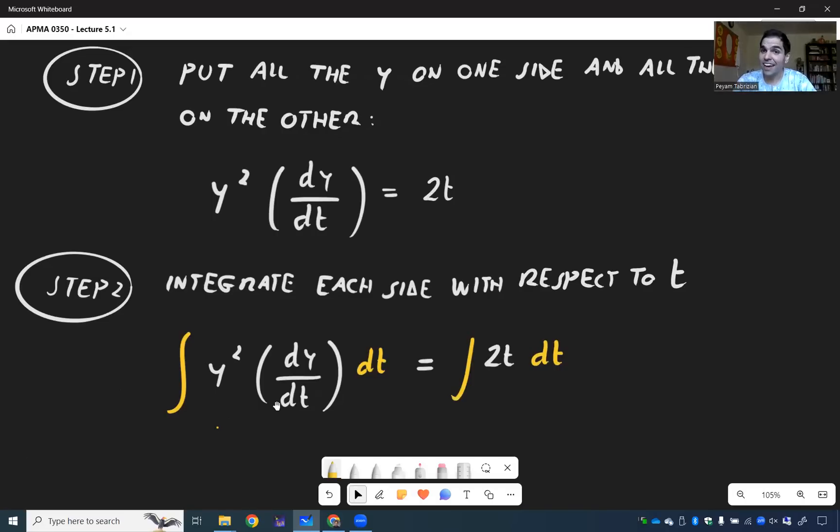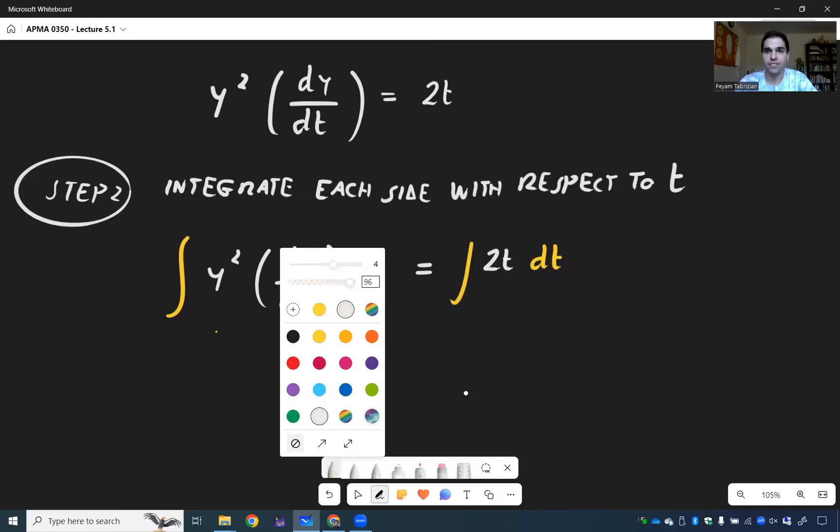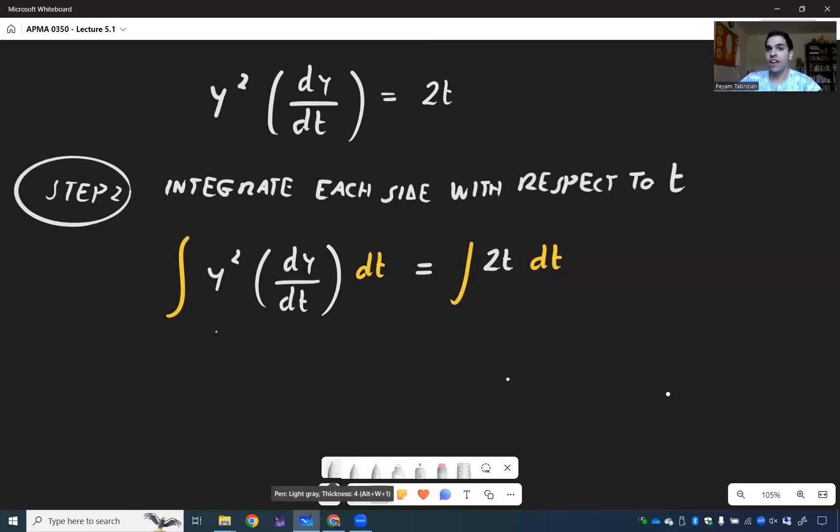Now the left hand side, you see a y prime t times dt. So one idea, and in fact that's the correct idea, is to use a u sub. And in fact, it might not seem like so, but separation of variables is based on u substitution.